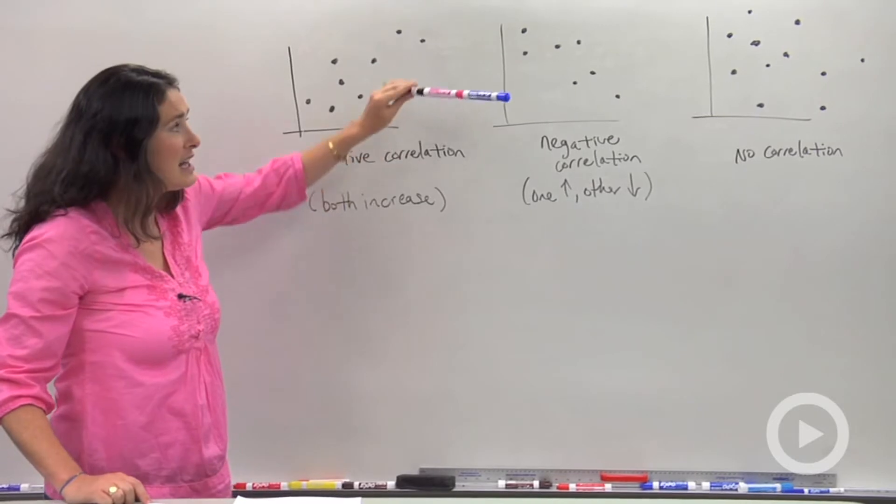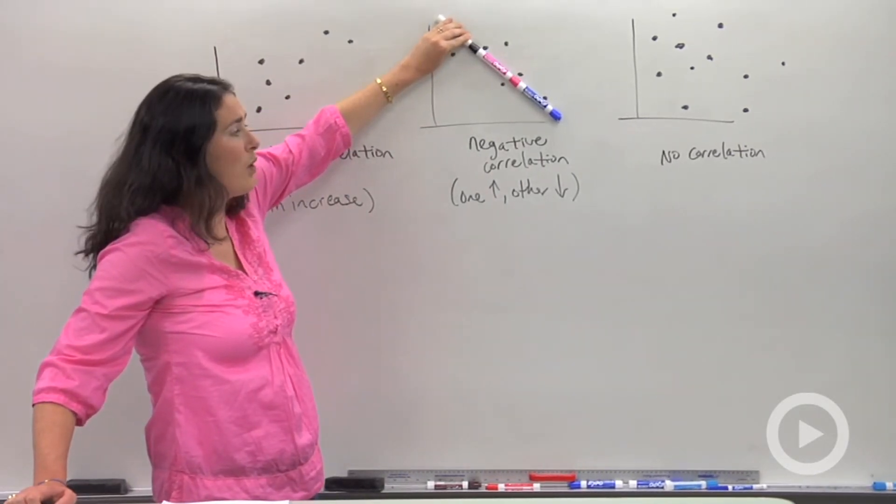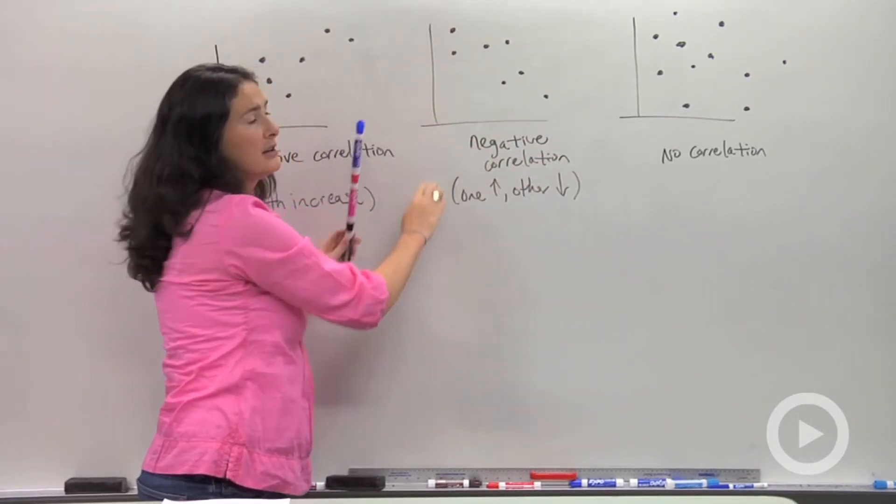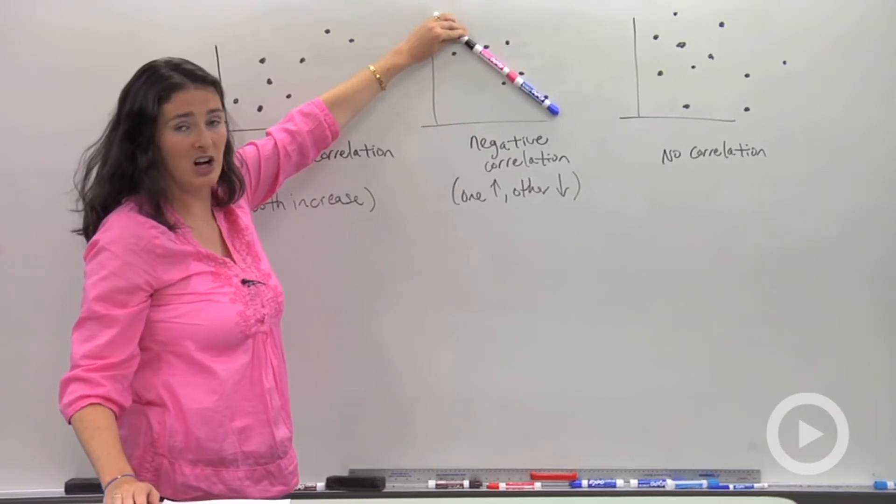Next one, same idea. Negative correlation. It's like a negative slope. As one variable gets larger, like this guy gets larger, this one's getting smaller. As one of them gets larger, the other one gets smaller. That's called a negative correlation.